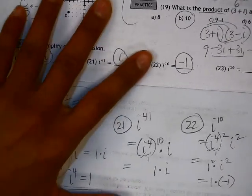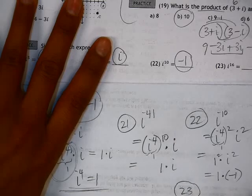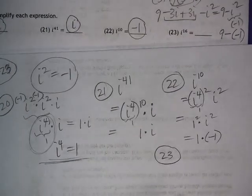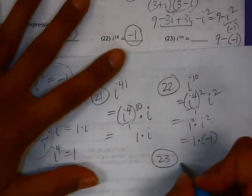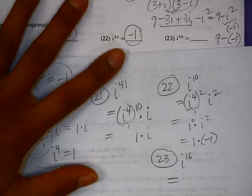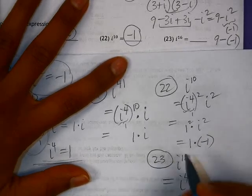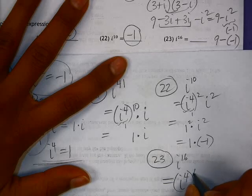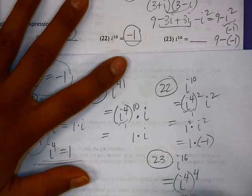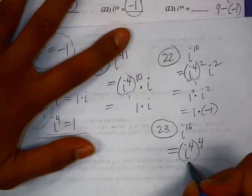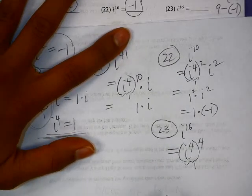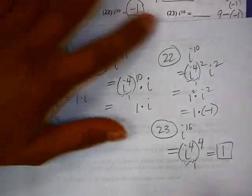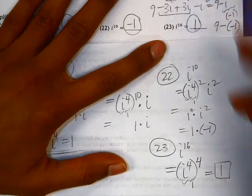Lastly, we have i to the 16th on number 23. Let's use i to the fourth again to our benefit. So i to the 16th. Let's decide how many times does i to the fourth go into i to the 16th. Well, it goes in evenly this time. So i to the fourth to the fourth would give us i to the 16th. And again, we know i to the fourth is equal to 1. 1 to the fourth is simply just 1. So i to the 16th is equal to positive 1.